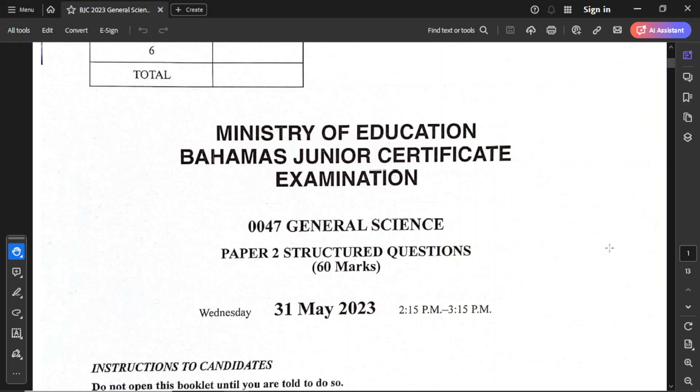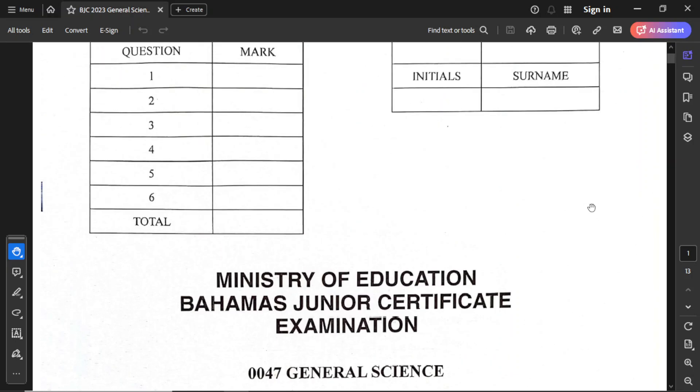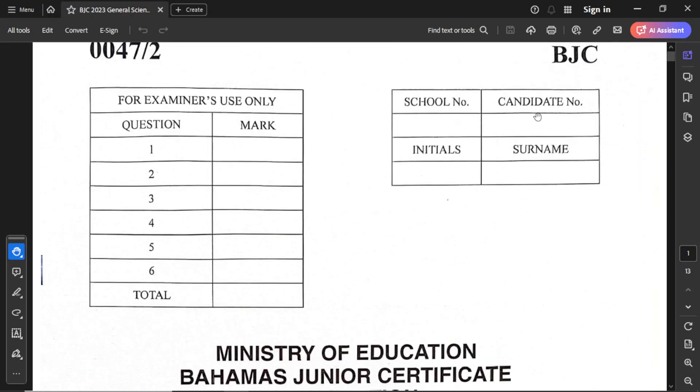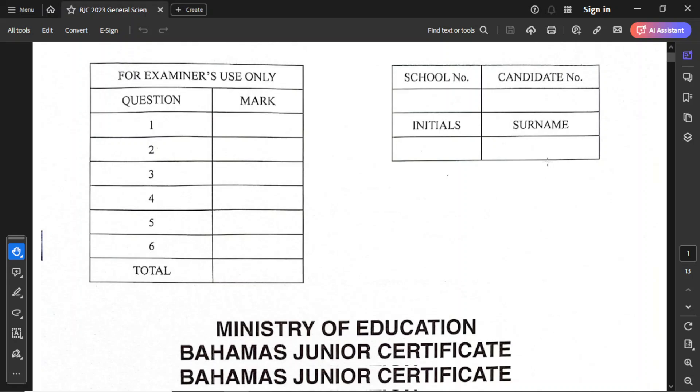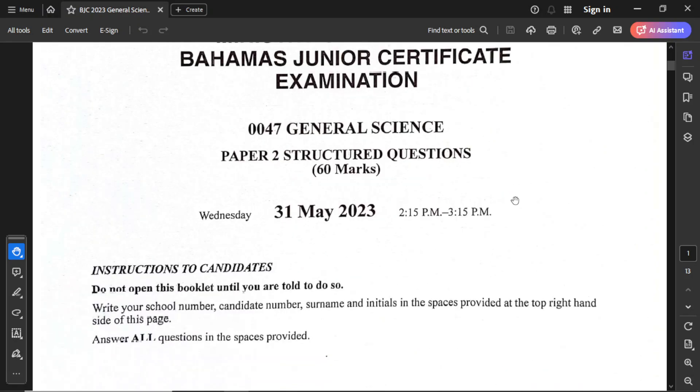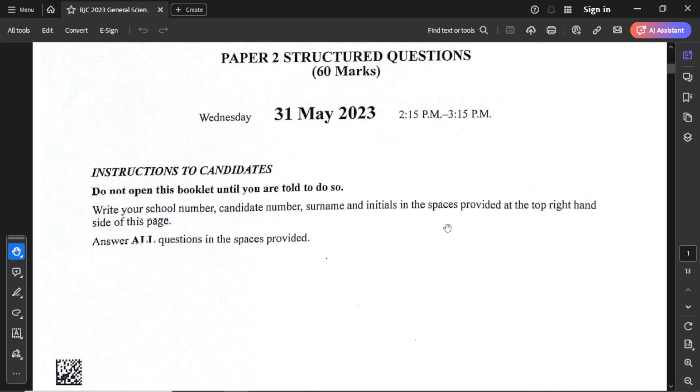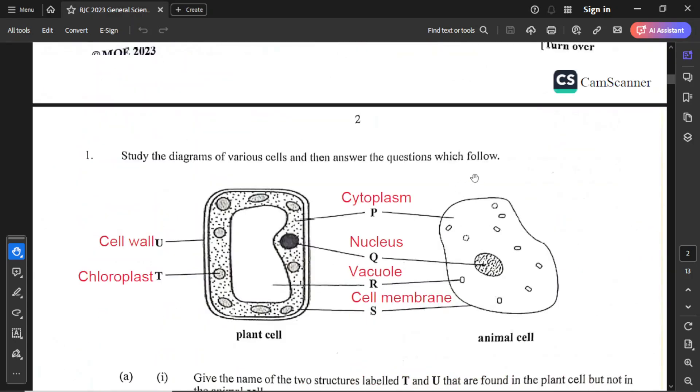Hello everyone, hope that you're doing well. Today we're looking at this 2023 BJC General Science Paper 2. Please remember when you start the examination, write your school number, candidate number, initials, and surname. Also, please go through the instructions carefully to ensure that you understand each instruction. If you have any questions or queries, please talk to your examiner. Let's go into question number one.